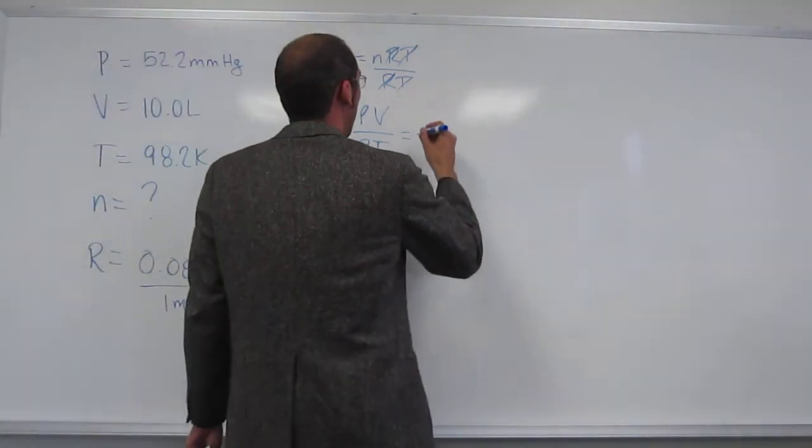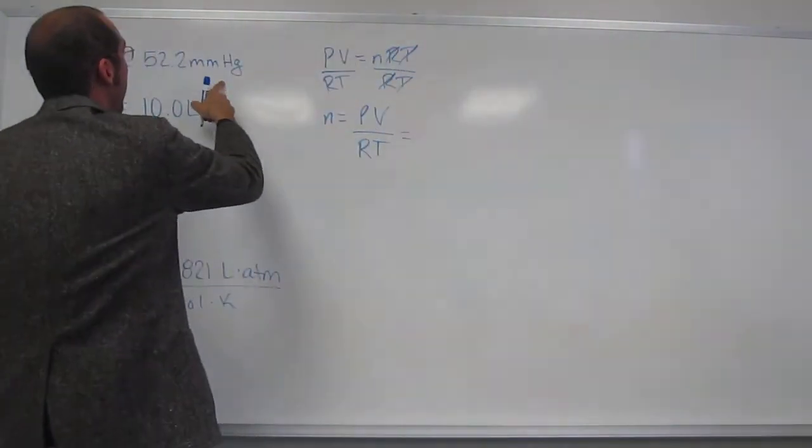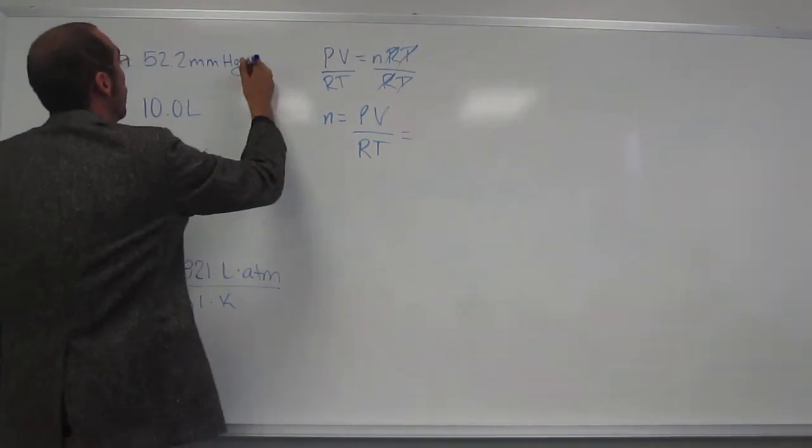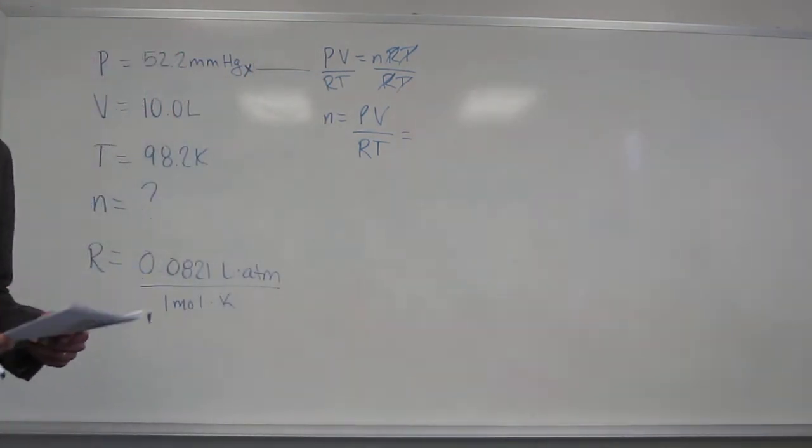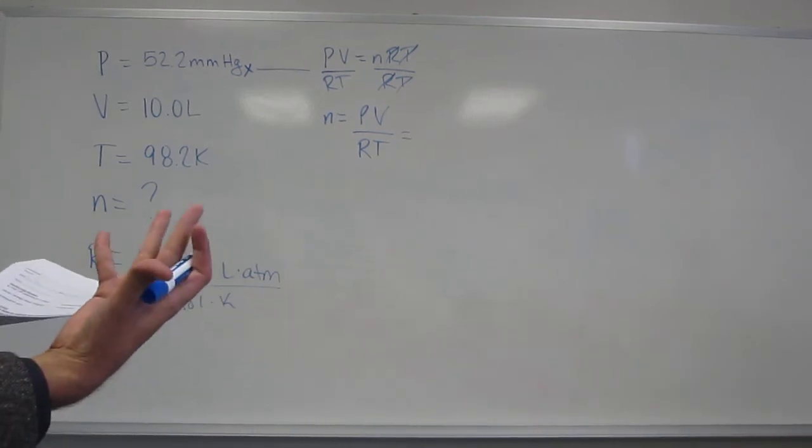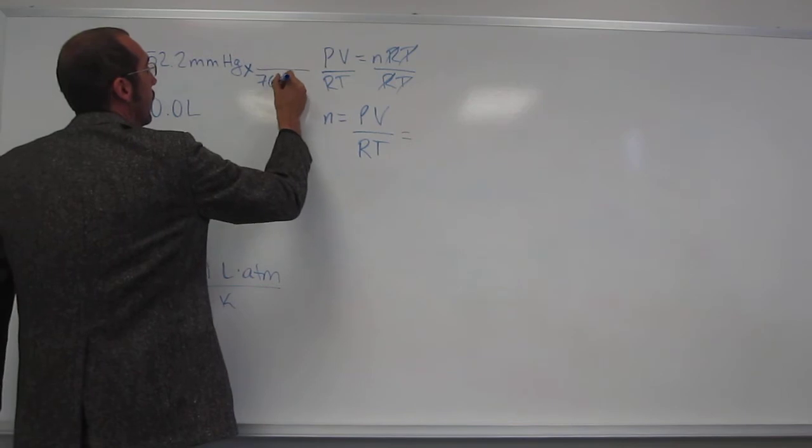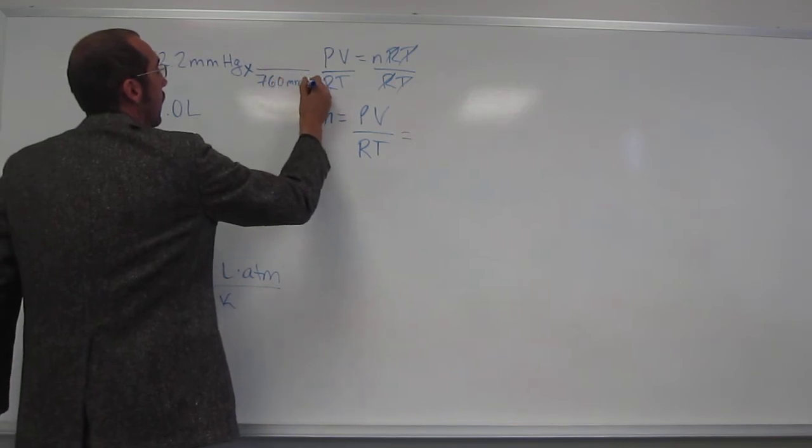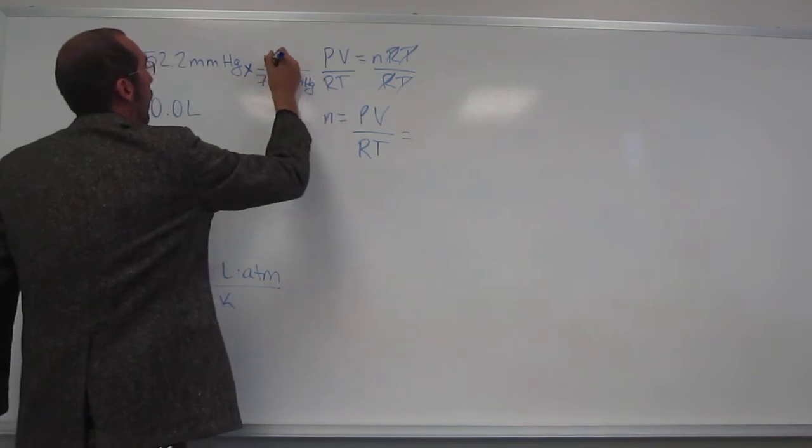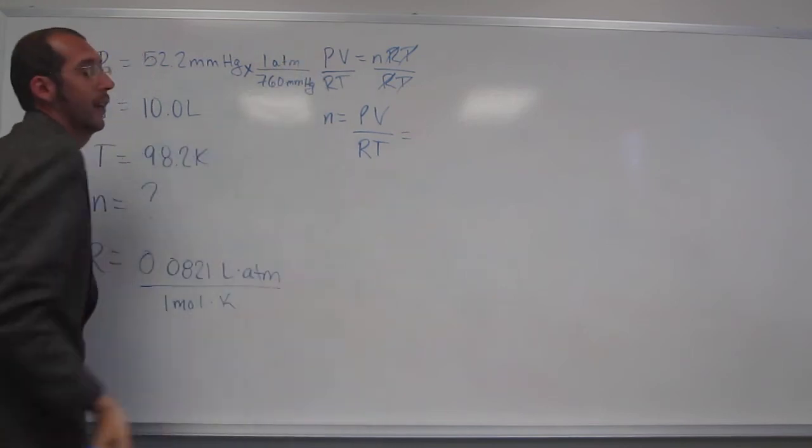So, let's just plug and chug. Well, we can't yet, right? We've got to convert that. So, do we got a conversion factor? Probably, right? Because I told you you wouldn't have to know that one. So, it's 760 millimeters of mercury divided by, or, 1 ATM divided by 760, right? So, we'll just take 52.2 divided by 760,